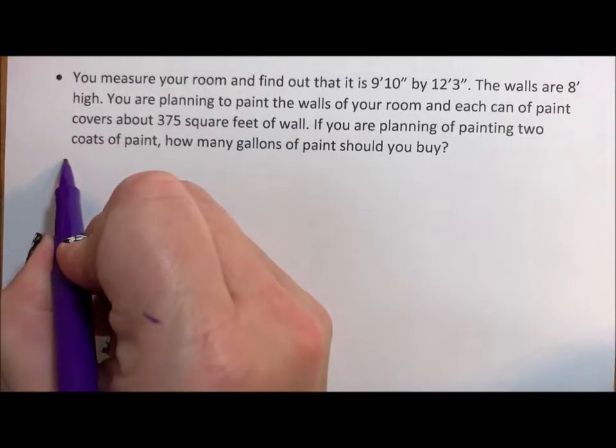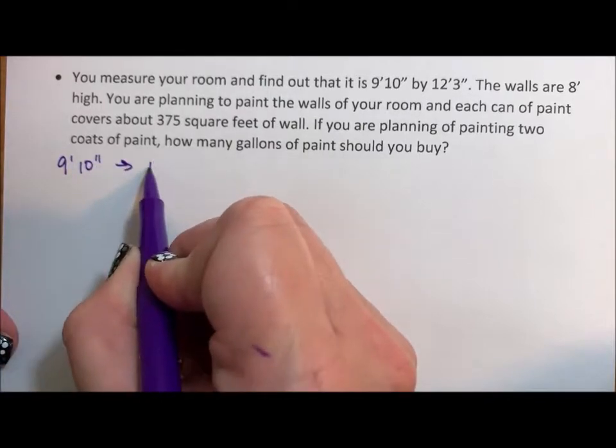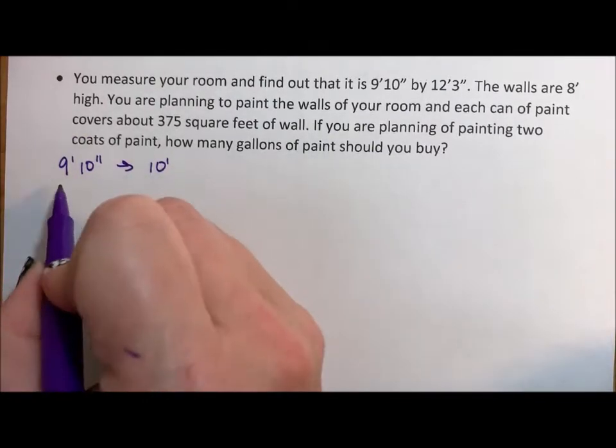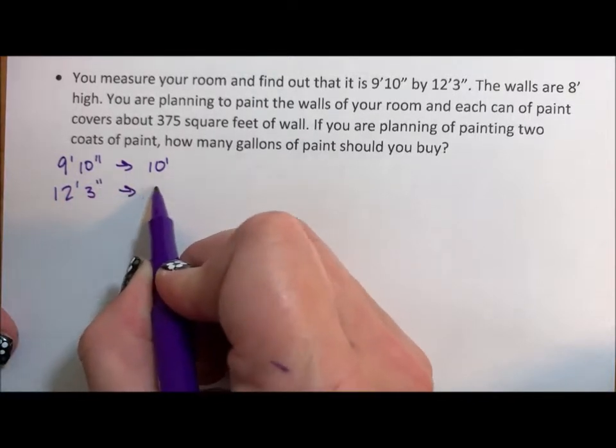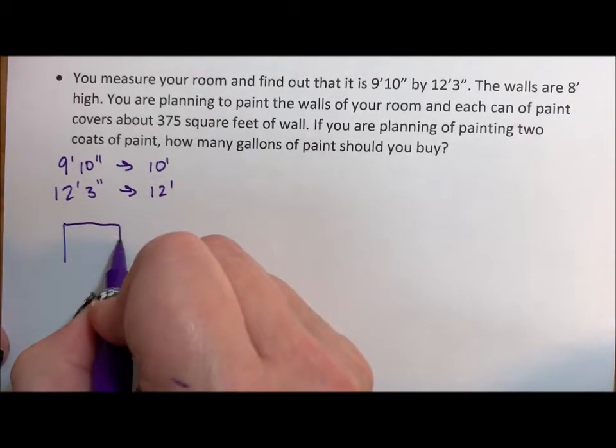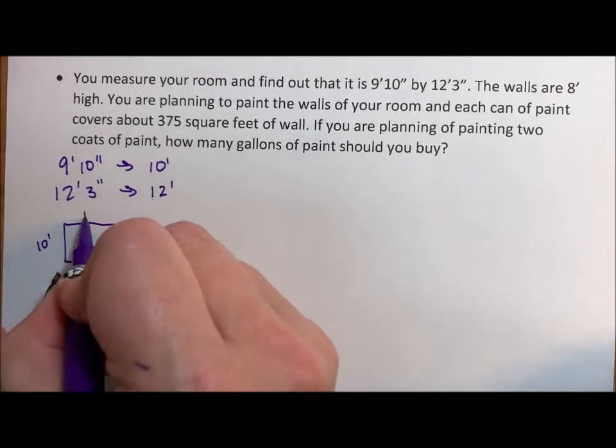First thing I would do is I would take the 9 feet 10 inches and just make that 10 feet, and I would take the 12 feet 3 inches and probably just make that 12 feet so that I have a room that's 10 feet by 12 feet.